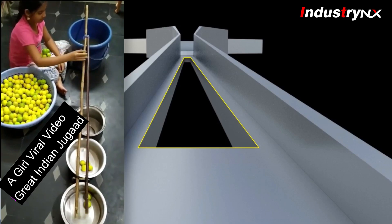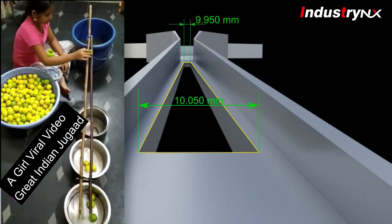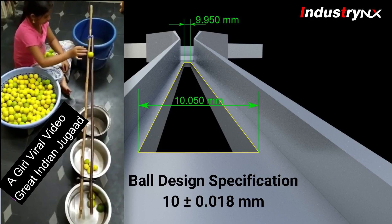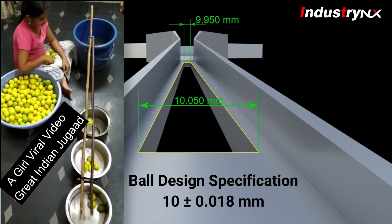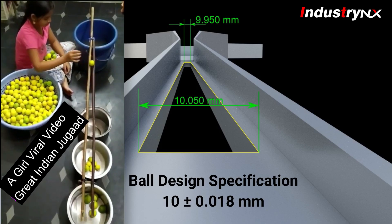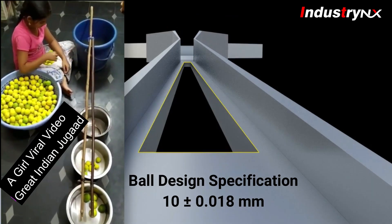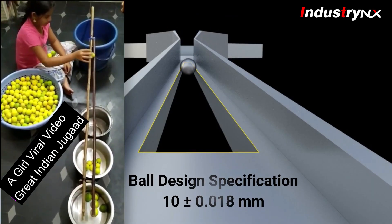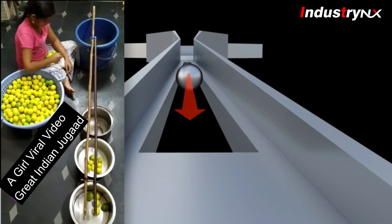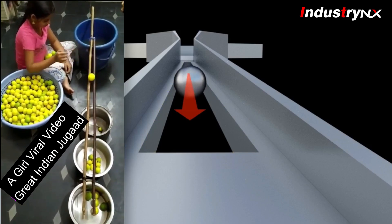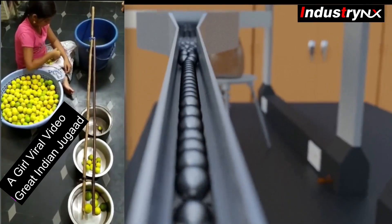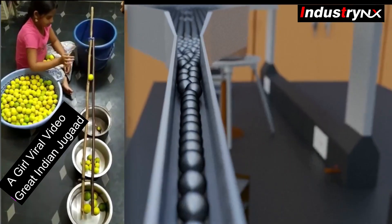The slot size at the starting point is 9.950mm, and most balls are above 9.980mm which is larger than 9.950mm, so the balls will slowly roll towards the end of the slot — but the slot width keeps increasing along the length.